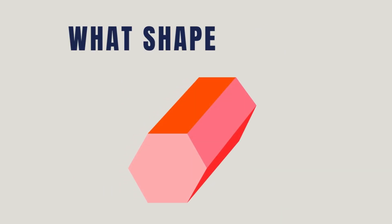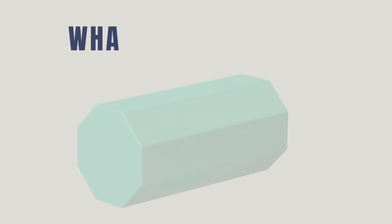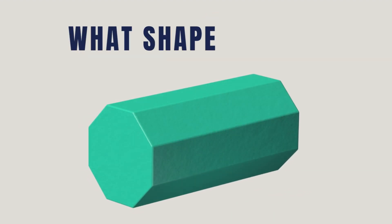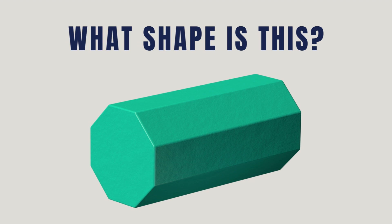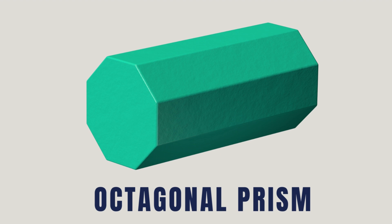What shape is this? It's a hexagonal prism. What shape is this? It's an octagonal prism.